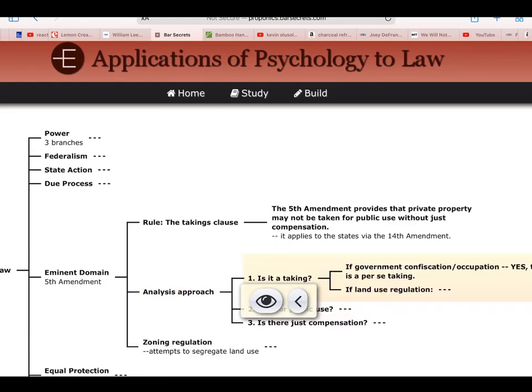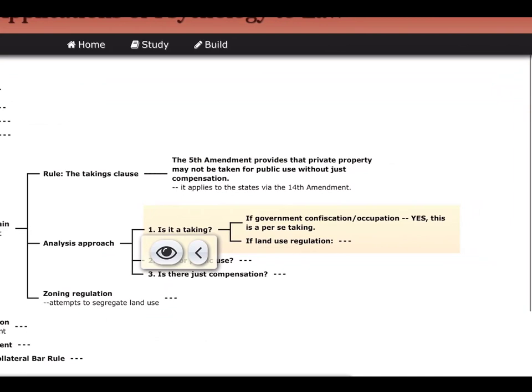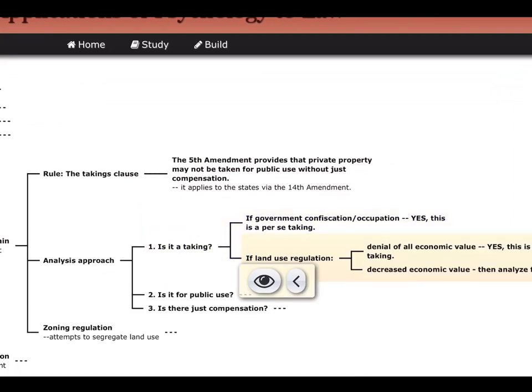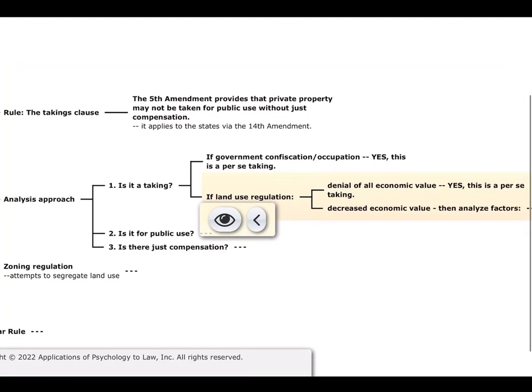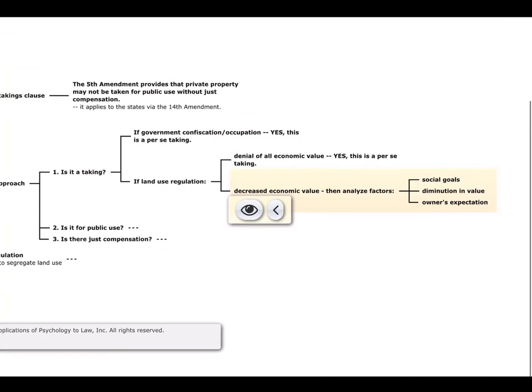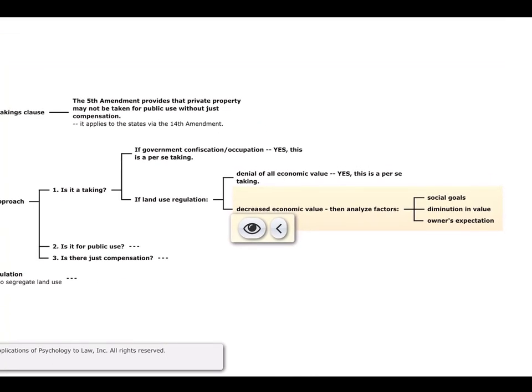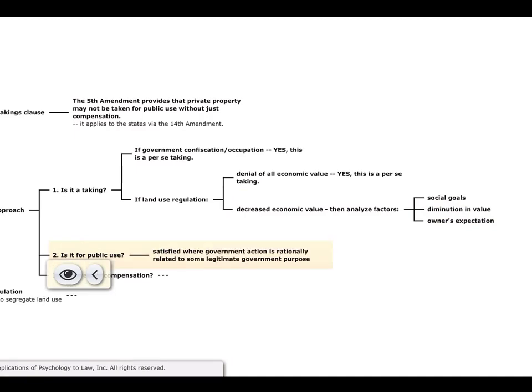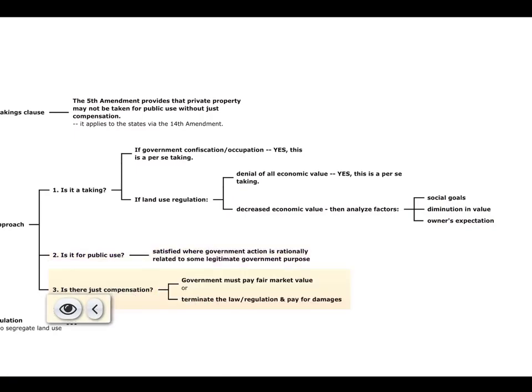Is it a taking? If it's a government confiscation, yes. But if it's a land use regulation, then either a denial of all economic value or just decreased economic value. And if it's just decreased economic value, then we analyze three factors: the social goals, the diminution in value, and the owner's reasonable expectations. But to do this analysis, we need to cover all three elements for a taking: Is it a taking? Is it for public use? And is there just compensation? All of that's going to go into our analysis in this hypothetical.